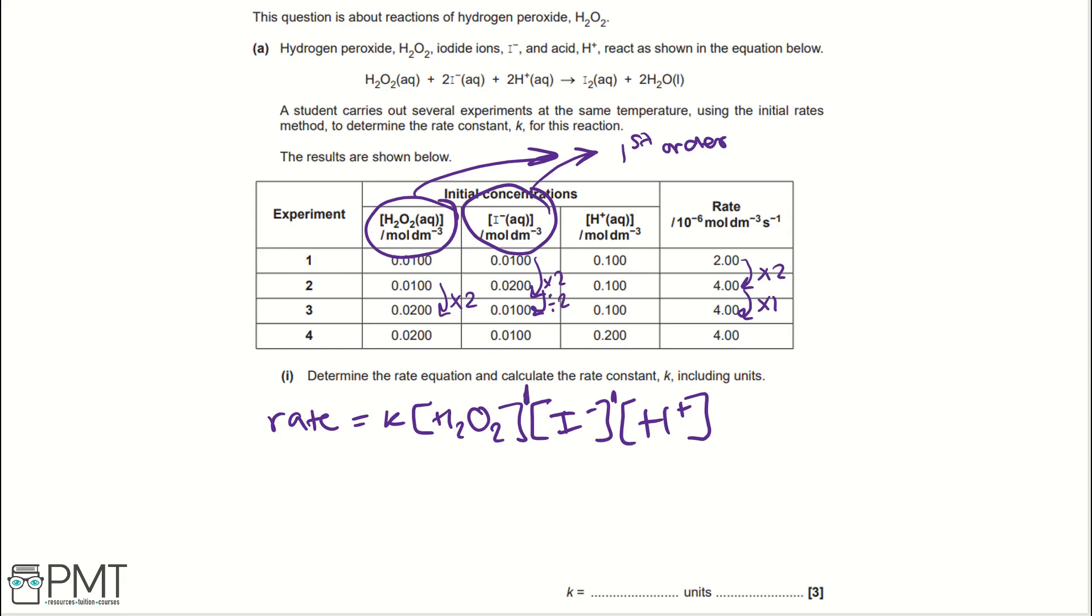When H+ has increased by times 2 and I- and H2O2 have stayed exactly the same, the rate has not changed. And so, the order of reaction for H+ is 0 order. So, we would have a little 0.